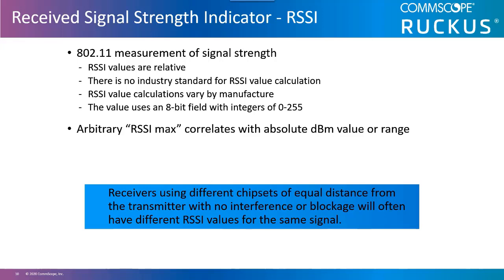In our previous example of RF math calculation, the EIRP was 20 dBm or 100 milliwatts. An intended receiver at a short distance away may actually have an RSSI value for that same signal of a mere negative 40 dBm. Relatively speaking, this is a weak signal compared to the EIRP.